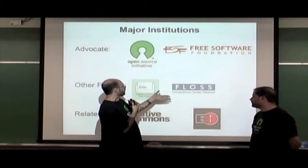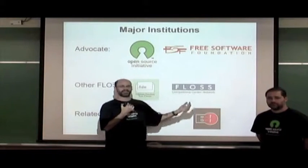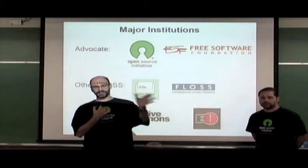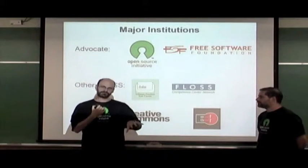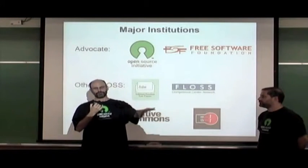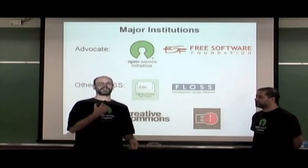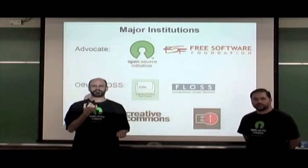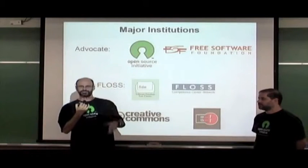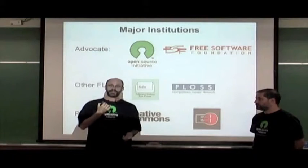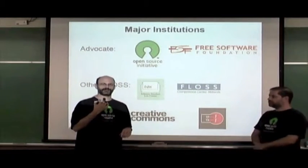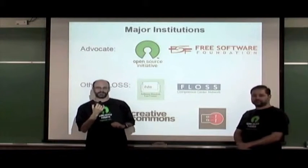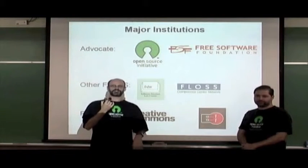We are trying to establish a competence center network — an international network of free and open source competence centers that would permeate the globe, including physical locations where communities around FLOSS could join, gather, and do events, seminars, and education to develop software. We already have these competence centers in 10 countries including Brazil, Germany, Italy, Spain, Japan, and China, all part of the flosscc.org network. Visit that website to find existing centers, and perhaps help found a new one in your region.